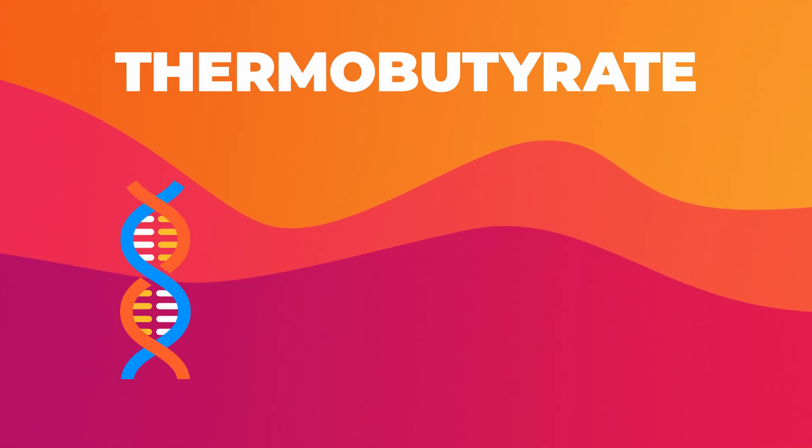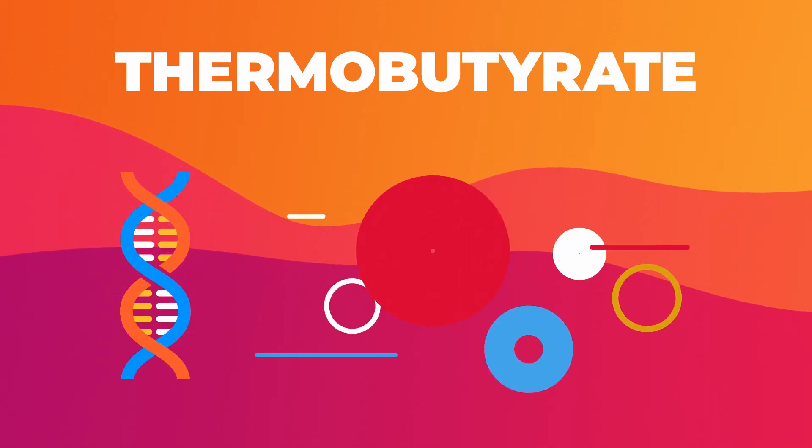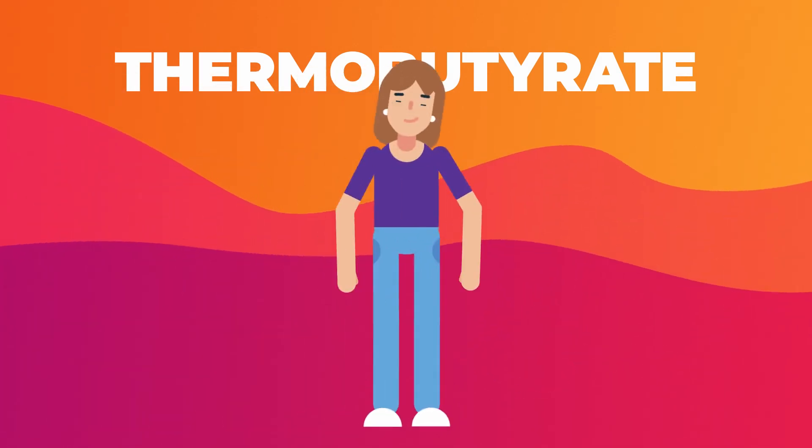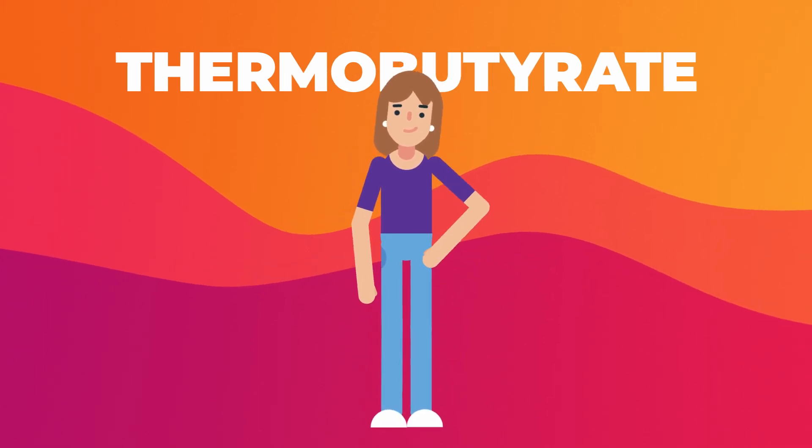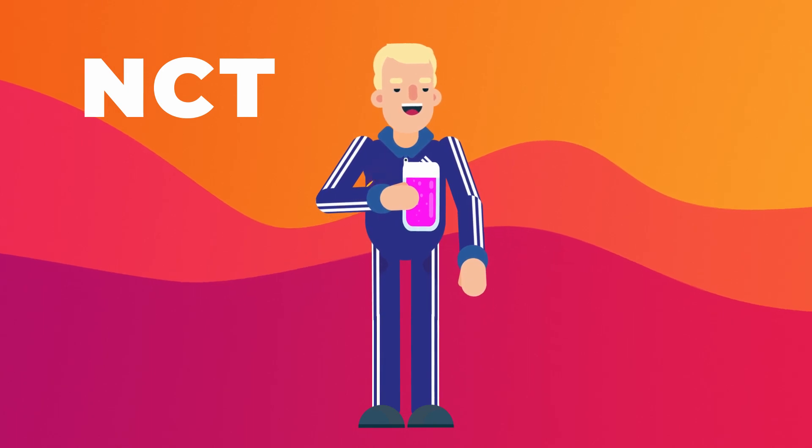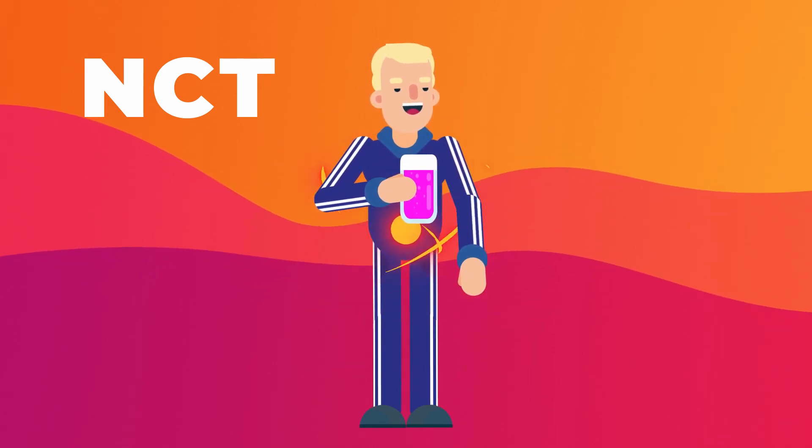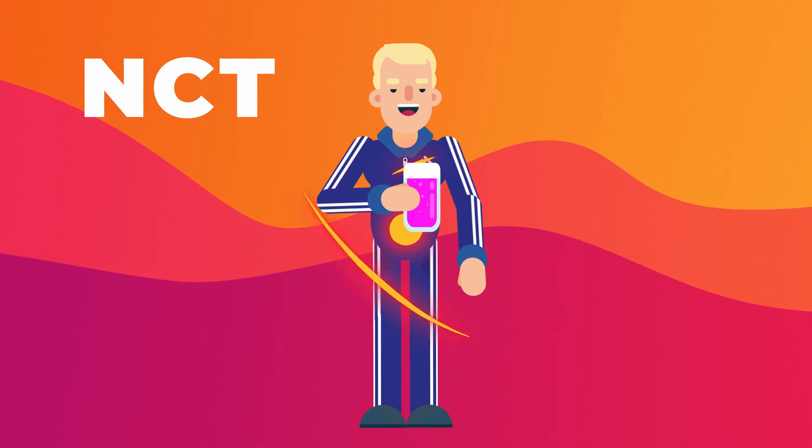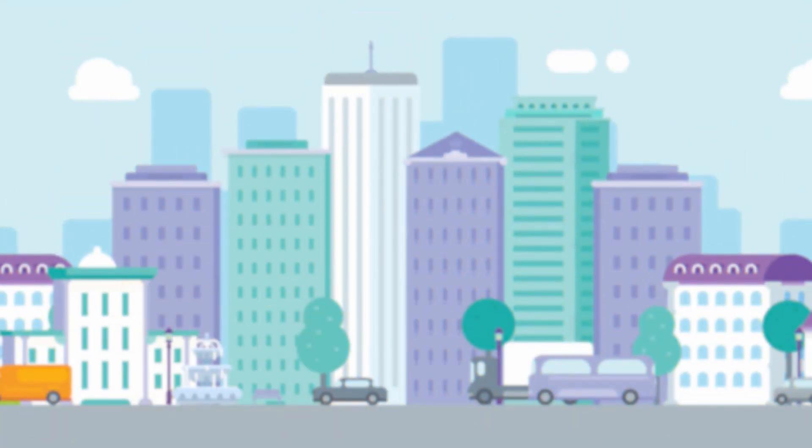Thermobutyrate goes into your body's secret code and wakes up special fat cells that burn fat. It also gets rid of stubborn fat that sits around your tummy and hips. When you drink NCT every day, it helps break down this stubborn fat and gives you energy. Your body's special fat cells use this energy to burn more fat and make you warm. It's like a secret fat-burning superhero.